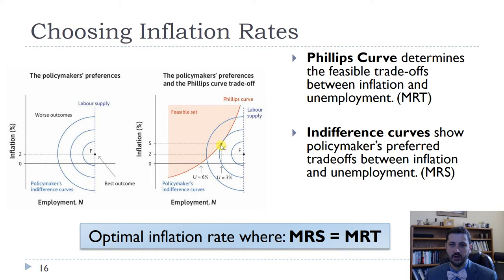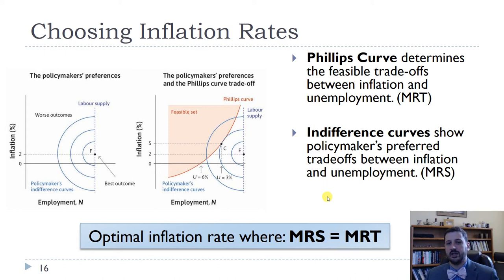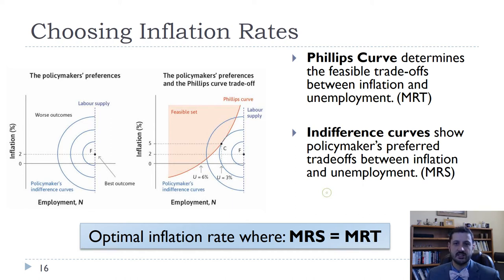We could be at point C, where we have 3% unemployment and 5% inflation, as opposed to being at a point with 6% unemployment and 0% inflation. That is how central banks — especially the Federal Reserve — thought about this trade-off in the 1960s and even into the 1970s.